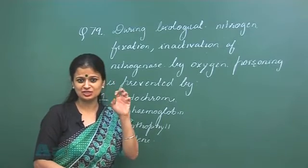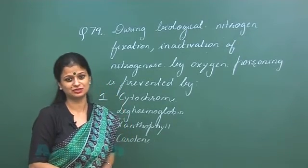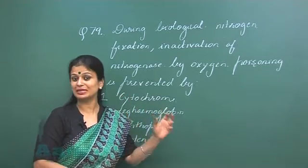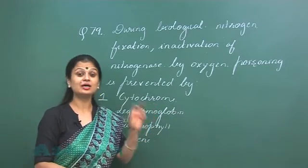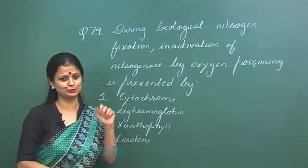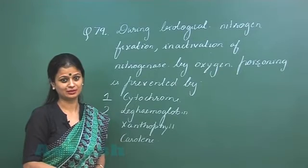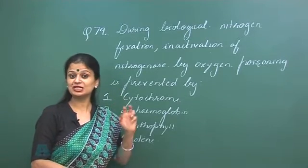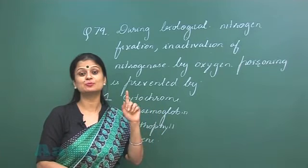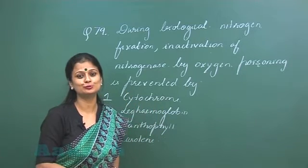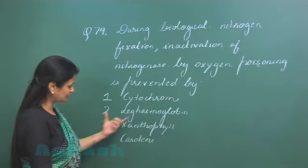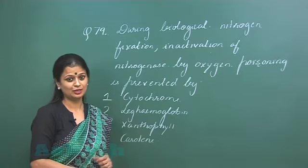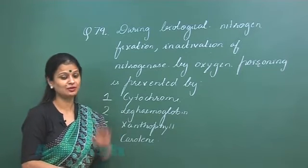To trap the oxygen, to bind with the oxygen, there is the presence of a reddish pink color pigment in the root nodules of leguminous plants. This reddish pink color pigment is leg hemoglobin, which traps the oxygen.